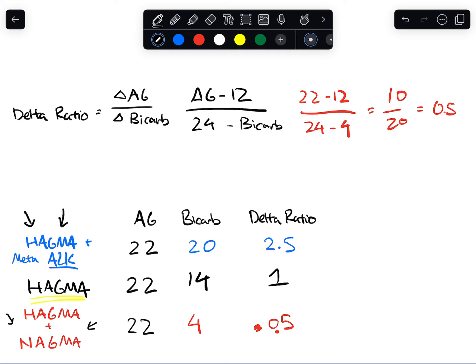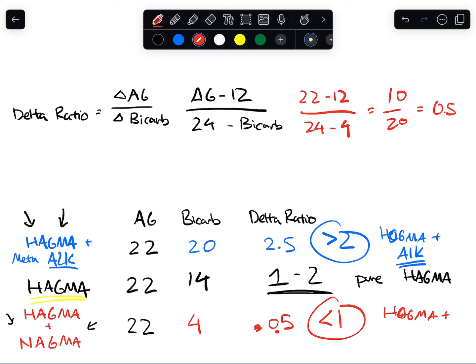So to put the hard guidelines on, anything between 1 to 2, a delta ratio between 1 and 2, is suggestive of a pure HAGMA, a pure high anion gap metabolic acidosis. If you have something greater than 2, then it's a HAGMA plus a metabolic alkalosis. And then if you have a value less than 1, that's going to be your HAGMA plus your NAGMA.